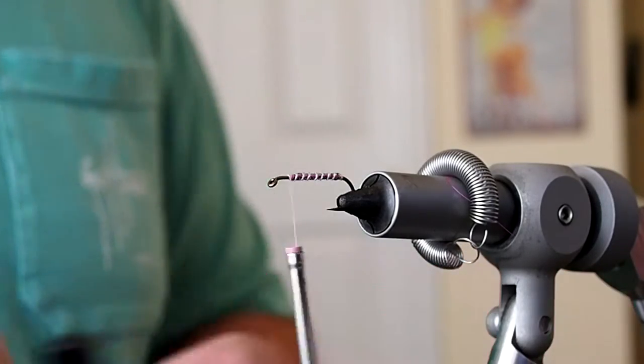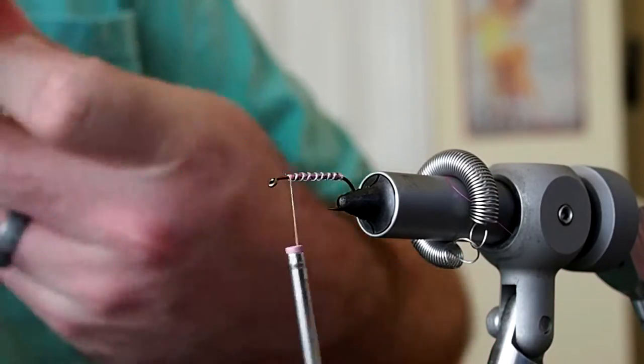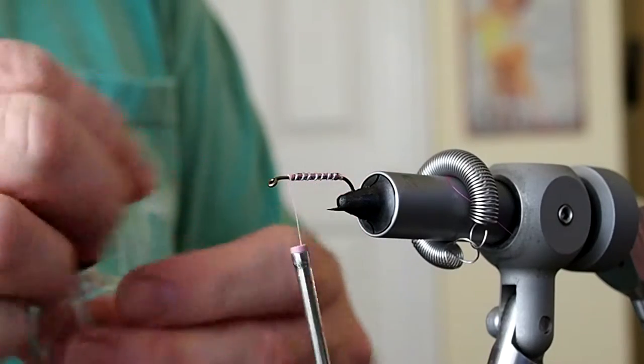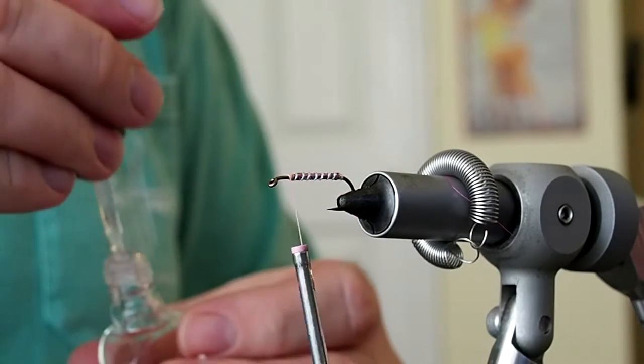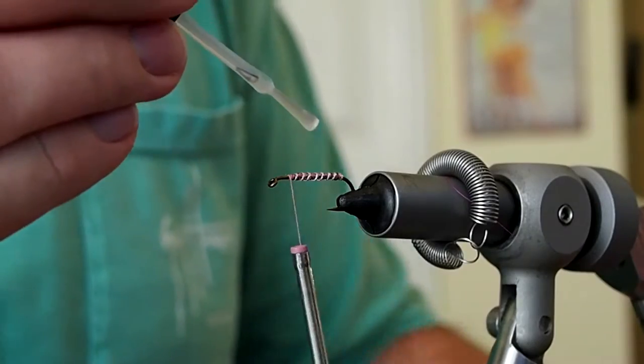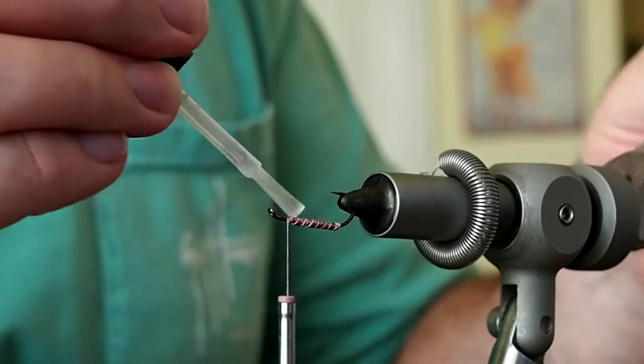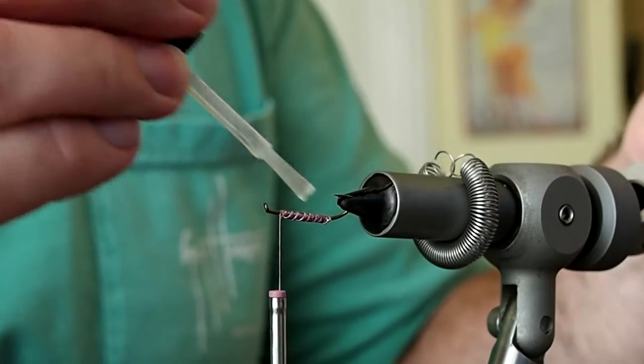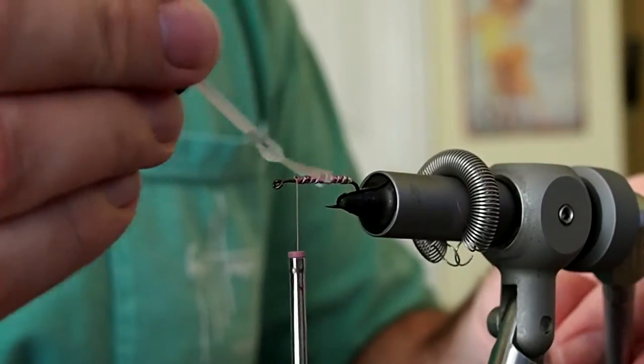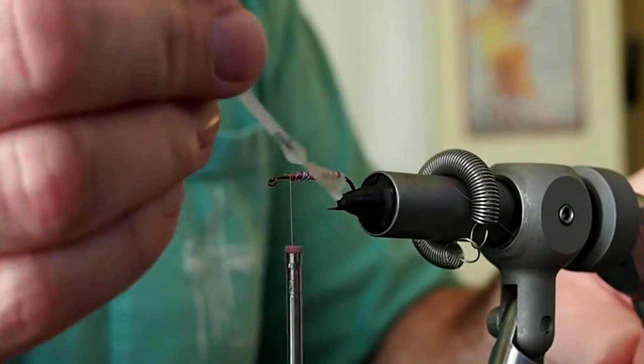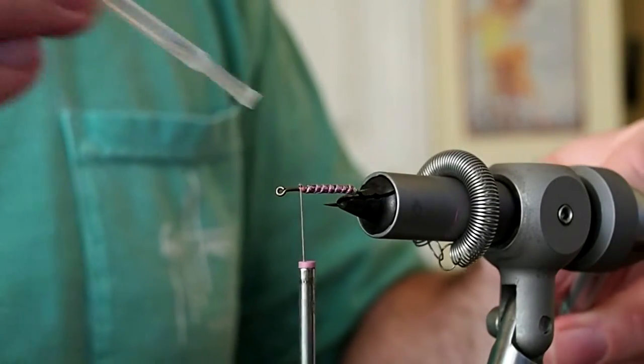Alright, so now to protect that body I'm just going to touch it with some Sally Hansen's. And that will just protect the body, protect the tinsel and make a more durable fly. Alright, so we'll just go ahead and let that dry.